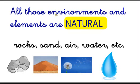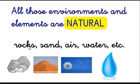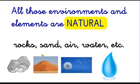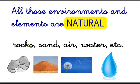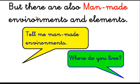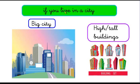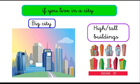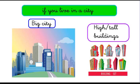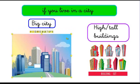All those environments and all the elements we just saw are natural — the rocks, the sand, the air, the water — all the things in these environments are natural. But there are also man-made environments, made by people. Where do you live? Maybe you live in a city, a big city like this one with tall buildings. This is a man-made environment, and the air is not as clean as in the jungle.